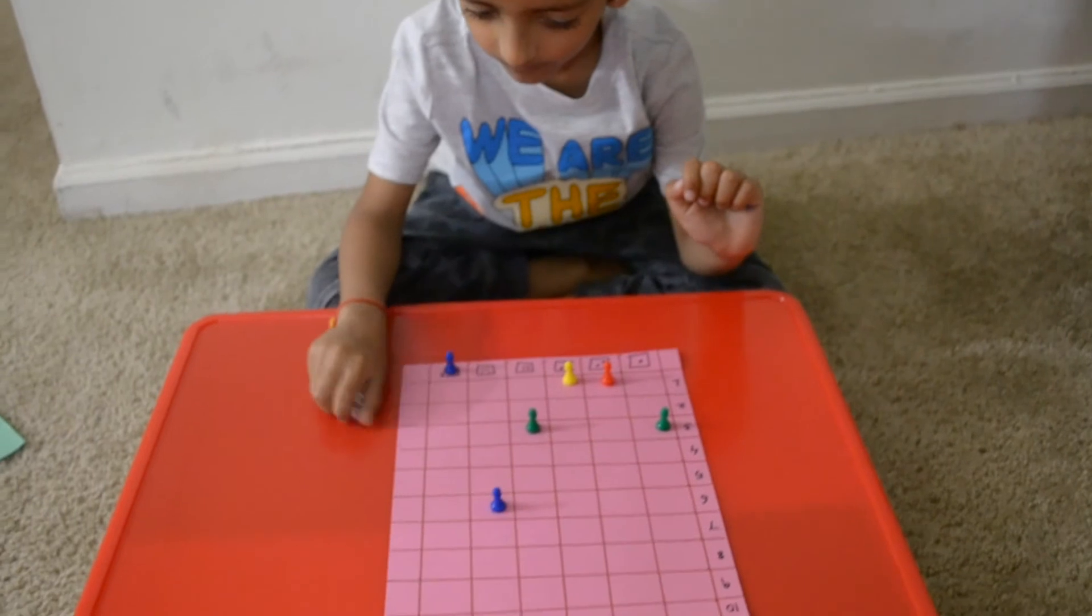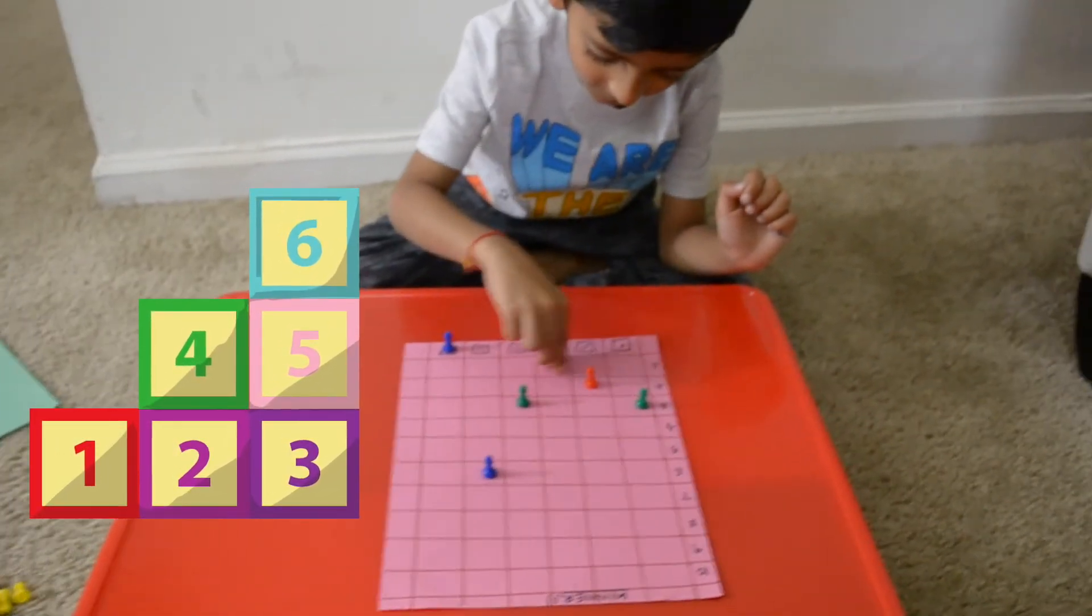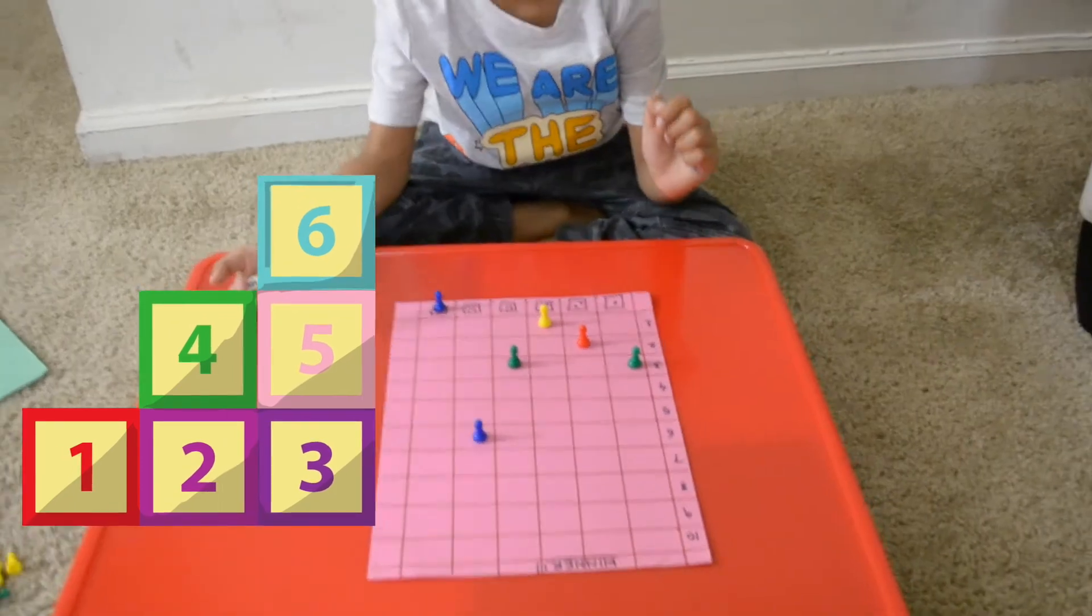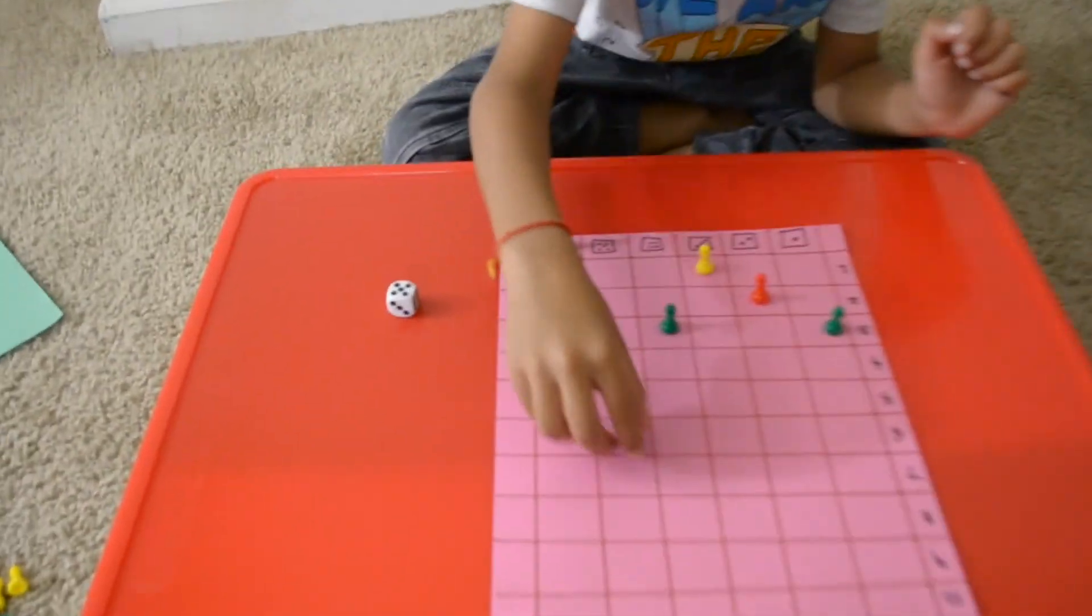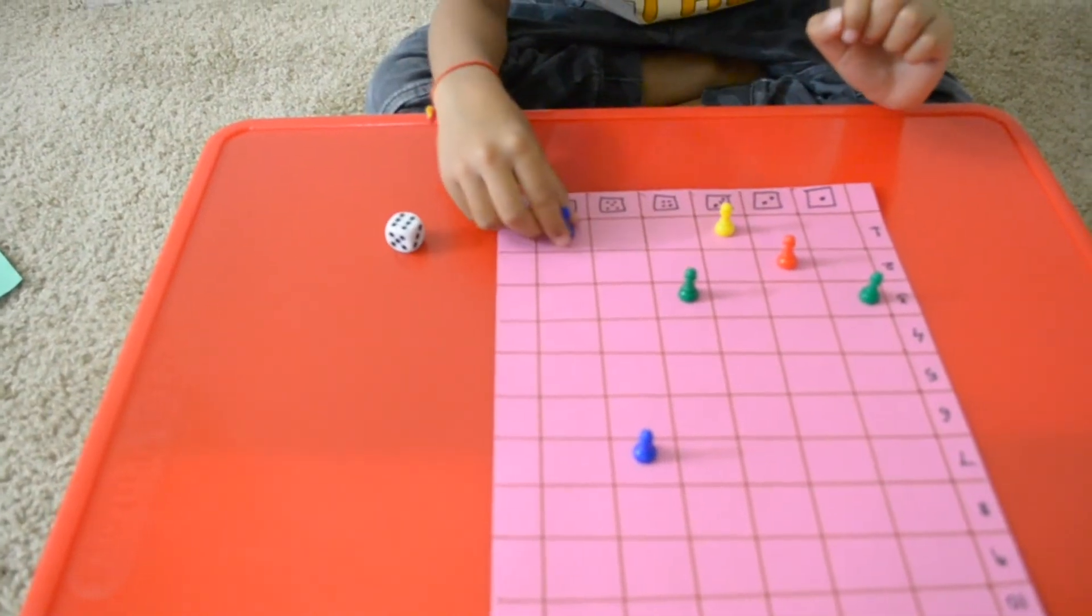The first one is quick number identification and matching the number, and second one is ordinal number. I hope you like this activity and you will play with your kids at home.